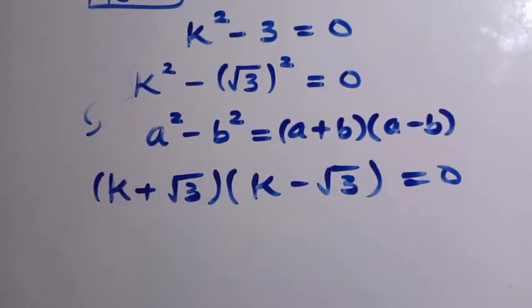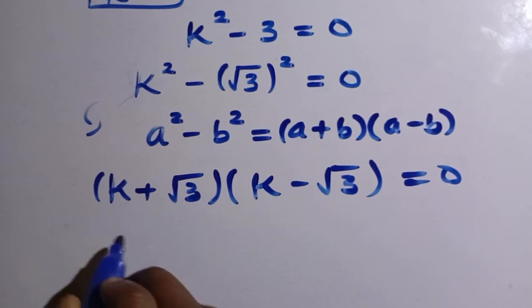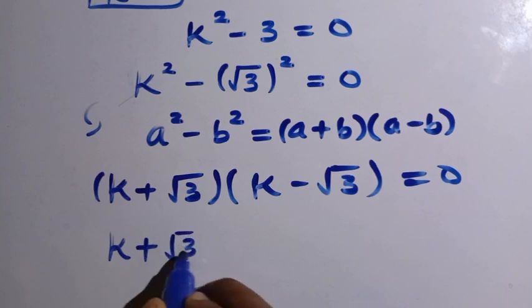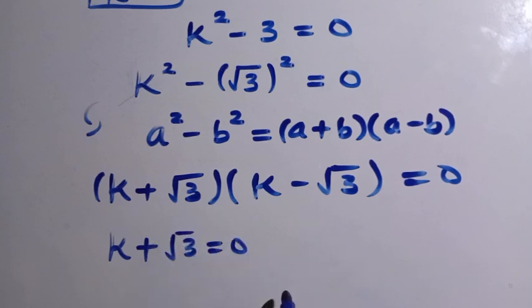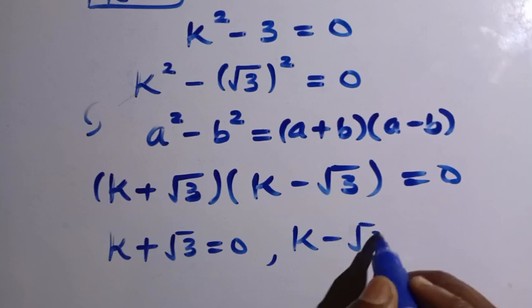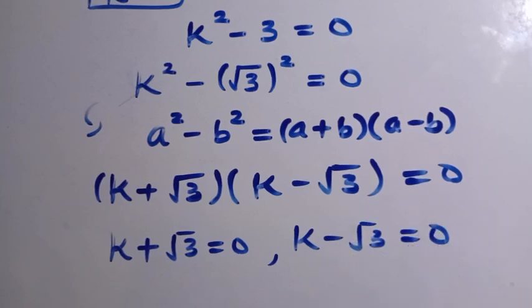So in the next step we are going to let this equal to 0 according to the rule of AB equals to 0 I applied above. Therefore we have K plus root 3 equals 0 or we have K minus root 3 equals 0.